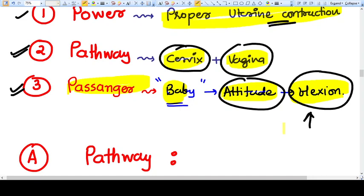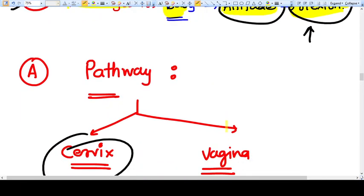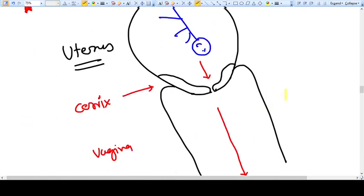In this particular video, we are going to discuss the cervix. Cervix acts as a gate of this pathway. If you see this figure, this is the uterus, this is the cervix here, and this is the vagina.